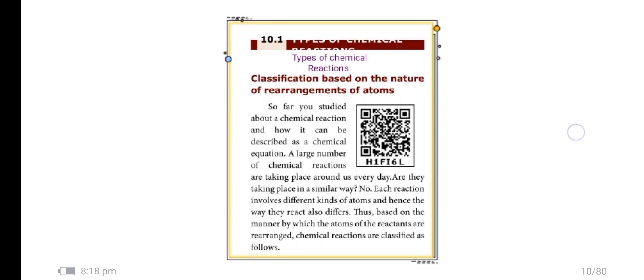Now we will see types of chemical reactions. Classification based on the nature of rearrangements of atoms. So far you studied about chemical reactions and how they can be described as chemical equations. A large number of chemical reactions are taking place around us every day. Each reaction involves different kinds of atoms and hence the way they react also differs. Thus, based on the manner by which the atoms of the reactants are rearranged, chemical reactions are classified as follows: combination reaction, decomposition reaction, displacement reaction, and double displacement reaction.